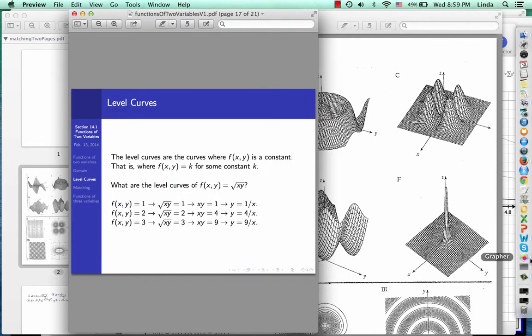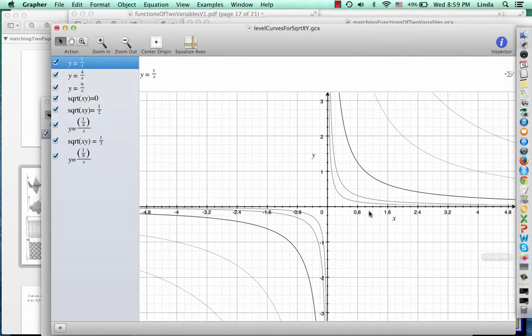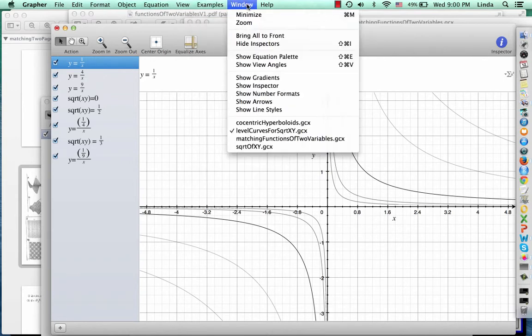Okay, so going back now that we've seen what the level curves look like, we have some sense that the surface is going up and flaring in this direction and that direction. So now let's go ahead and look at a three-dimensional graph.